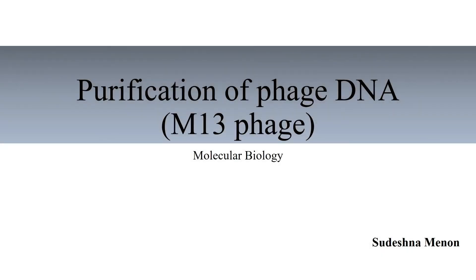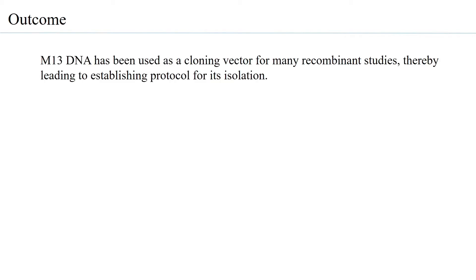Purification of M13 phage DNA, another DNA which has been widely used as a cloning vector and also for purposes such as sequencing. Therefore, there is a need to isolate the DNA from the M13 phages. M13 DNA has been used as a cloning vector for many recombinant studies, thereby leading to establishing a protocol for its isolation.